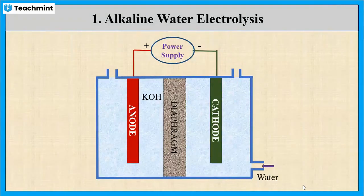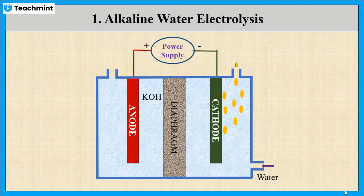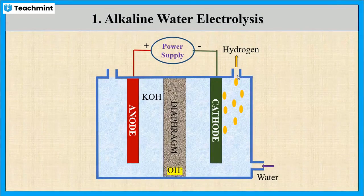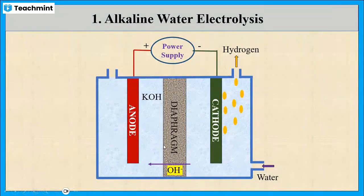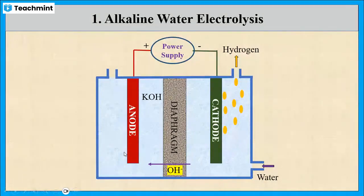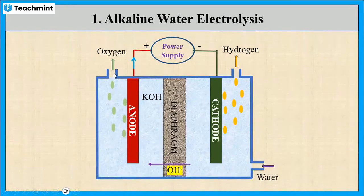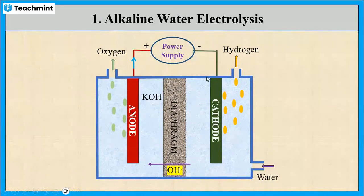Whenever water passes through the chamber, it gets absorbed on the cathode and releases H₂ gas. The OH⁻ ions formed diffuse through the diaphragm to the anode chamber. At anode, OH⁻ ions are converted into oxygen gas along with the liberation of electrons, which move in the external circuit.